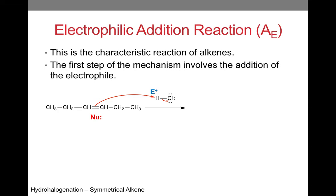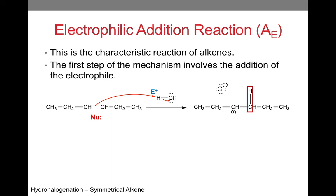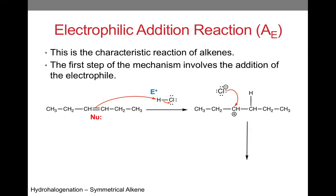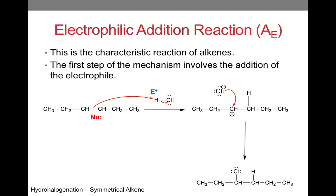What product does this give us? The first step involves the addition of the electrophile, so the hydrogen will add and we will get a carbocation. Also note that we get a chloride ion, which is important for the next step of the reaction. Looking at these products, we can consult the first rule of organic chemistry — opposites attract — so the chloride ion will form a bond with the positively charged carbon. The product of this reaction is 3-chlorohexane.